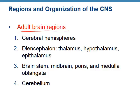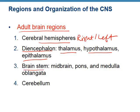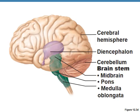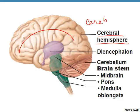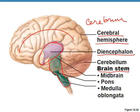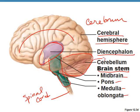Here's a list of the adult brain regions. We have the cerebral hemispheres — right and left. Then we have the diencephalon region, which is composed of the thalamus, the hypothalamus, and the epithalamus. Then we have the brain stem, which is the midbrain, the pons, and the medulla oblongata. And then last, we have the cerebellum. This figure color codes everything: cerebral hemisphere, diencephalon in purple, brain stem in green, and the cerebellum in the back section. Directly inferior to the brain stem is your spinal cord.